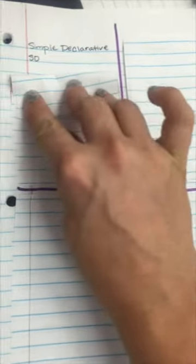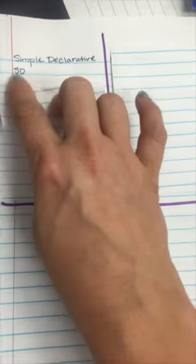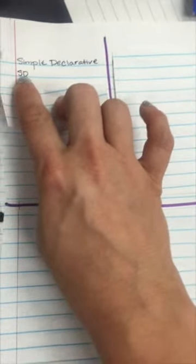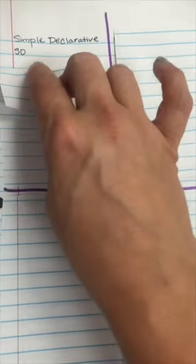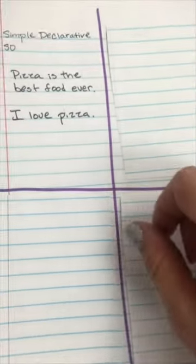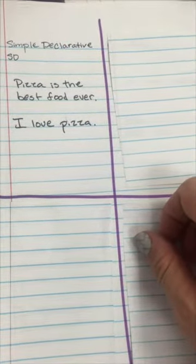The first type of topic sentence that we deal with is a simple declarative sentence, and the kids will just label that SD. It's just a very simple sentence that tells you what your topic is about. So if we're going to write about my favorite food, then I might tell you something like pizza is the best food ever, or I love pizza.